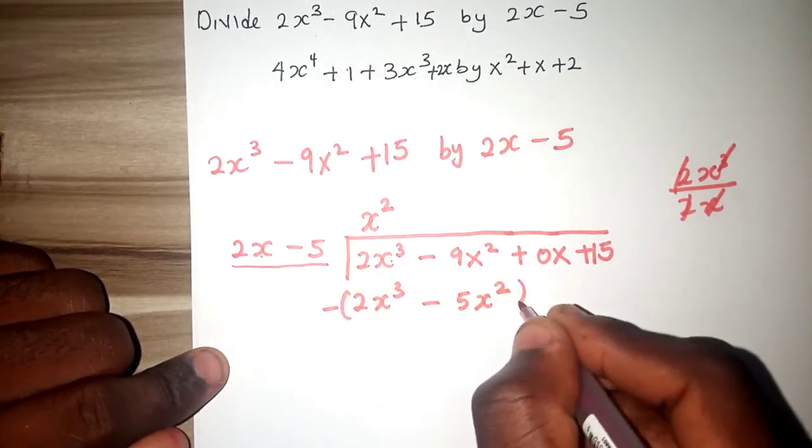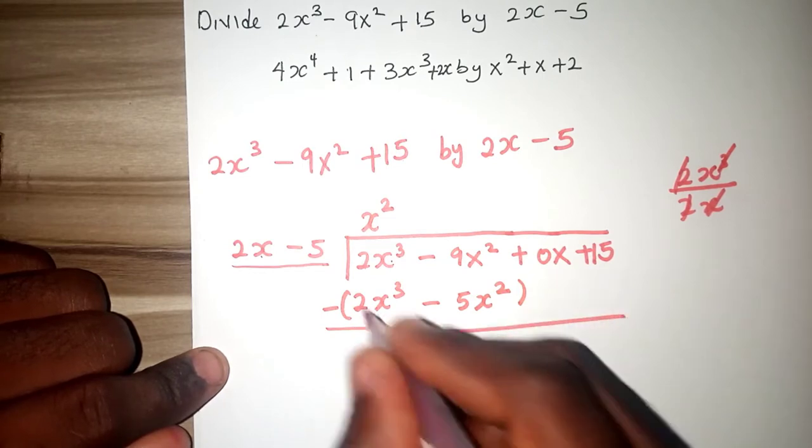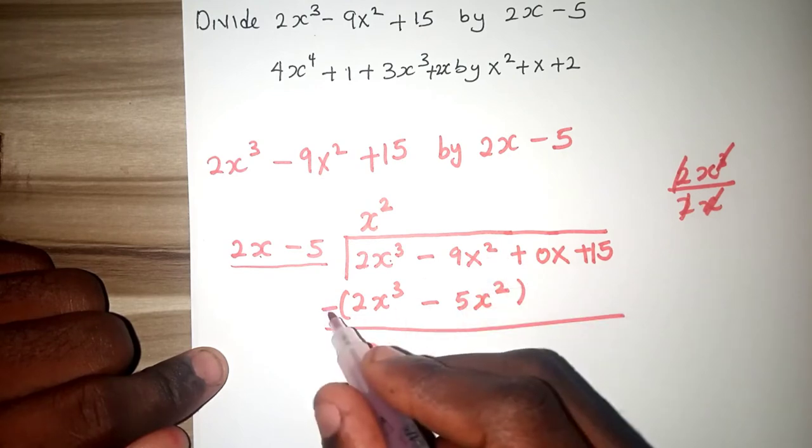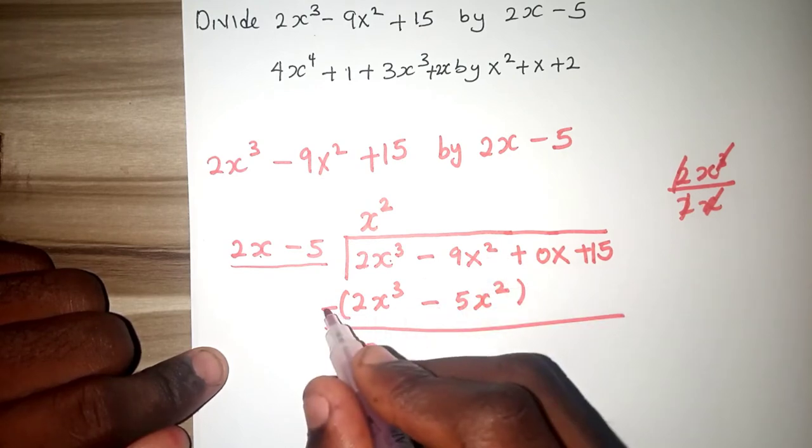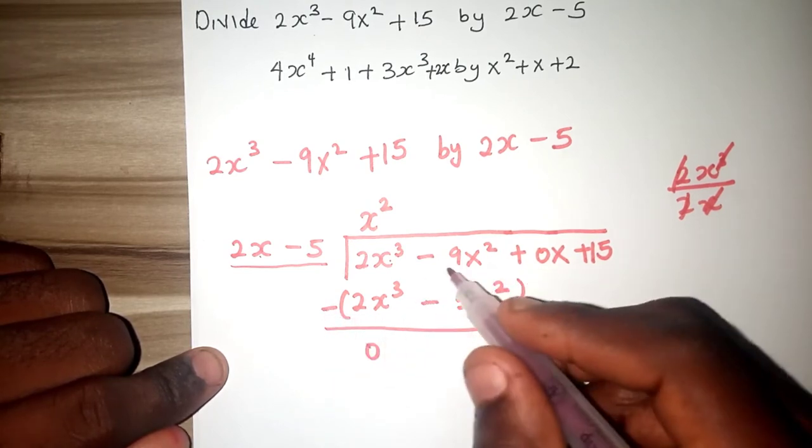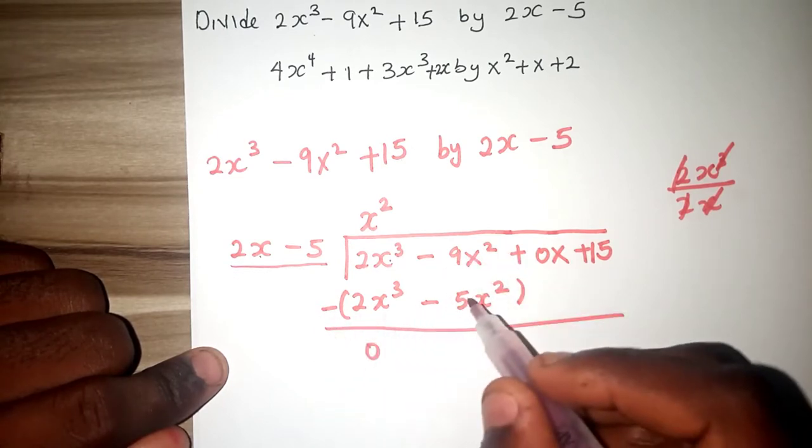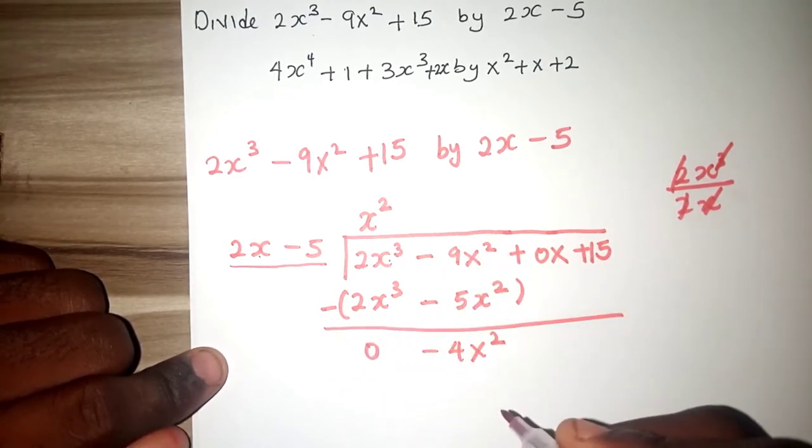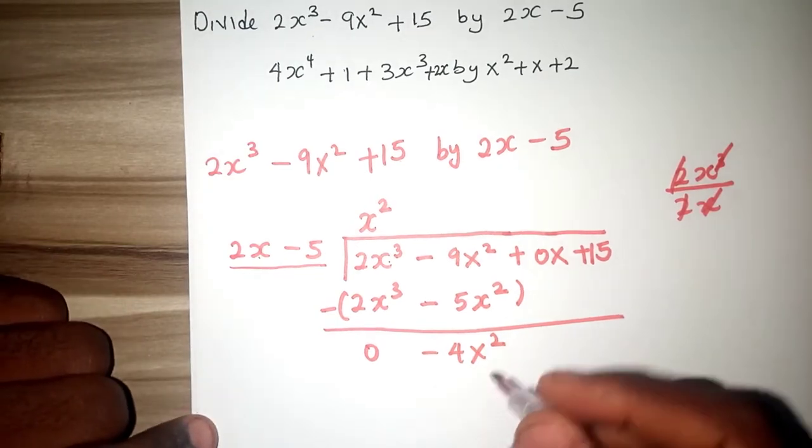Introducing your minus, we have 0 minus 9x squared plus, don't forget minus times minus will give us plus, minus 9x squared plus 5x squared, that will give us minus 4x squared.